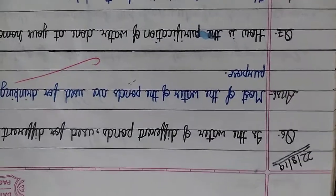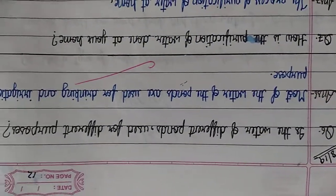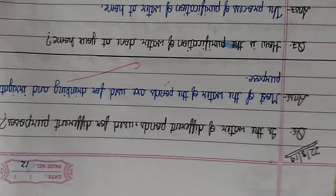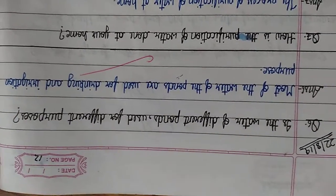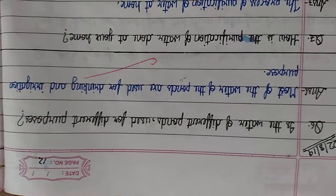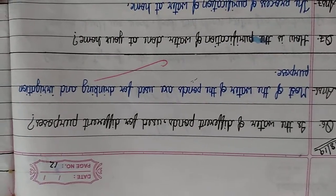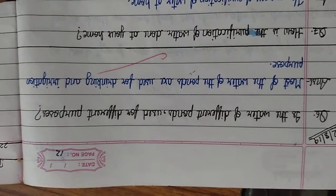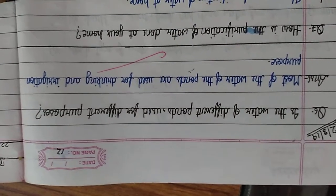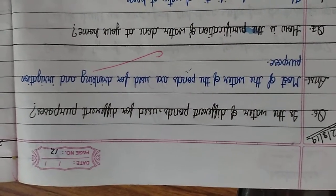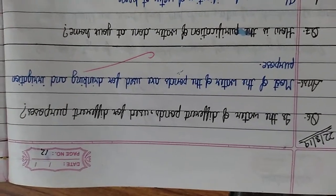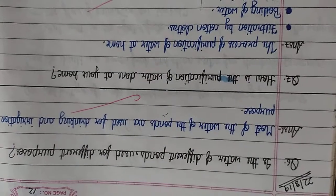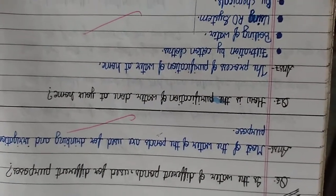Is the water of different ponds used for different purposes? Kya alag-alag ponds ka paani alag-alag purpose ke liye use kar sakte hain? Most of the water of the ponds is used for drinking and irrigation purposes. Mostly drinking ke liye aur irrigation ke liye use kiya jaata hai.